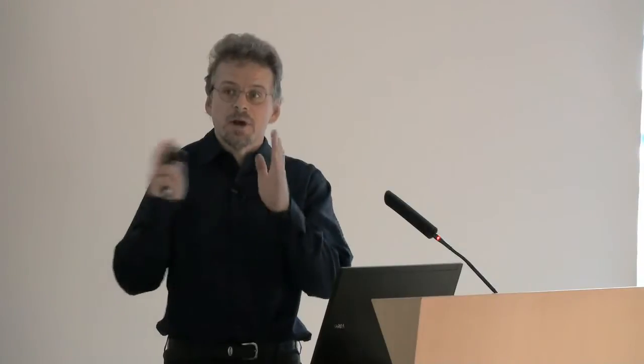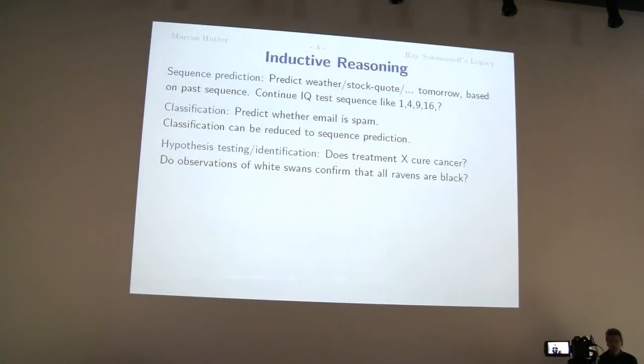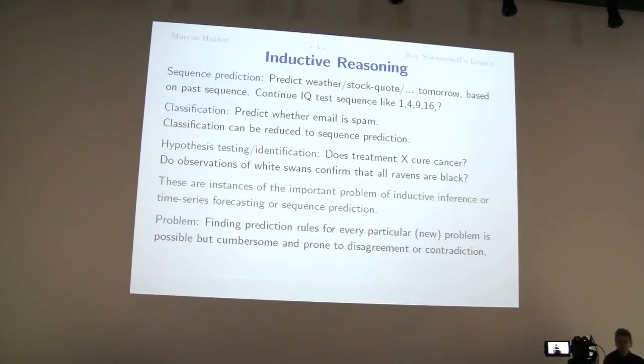What comes next? Or a classification task, like predicting whether an email is spam is actually also a prediction task. So what you have is you have some sort of feature vector, some class label, feature vector, class label, and then another feature vector, and then you want to ask what is the next class label. So classification is nothing else than a sequence prediction task. Or you can phrase it as a sequence prediction task. Hypothesis testing or identification, it's about induction.